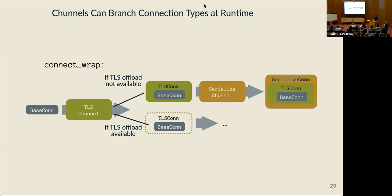More generally, channels can specify branching logic based on information from the runtime environment. For example, an implementation of a TLS channel could check its runtime environment for the presence of a TLS offload. If that offload is available, it performs an implicit transformation and waits for the offload to do the TLS work. But if an offload is not available, it provides a channel implementation that performs that functionality in software. The difference between this and a select is that with a select, Bertha checks compatibility at runtime. Whereas with internal branching, the library developer is asserting that these two runtime-dependent choices won't make a difference in terms of compatibility with the other side of the connection.